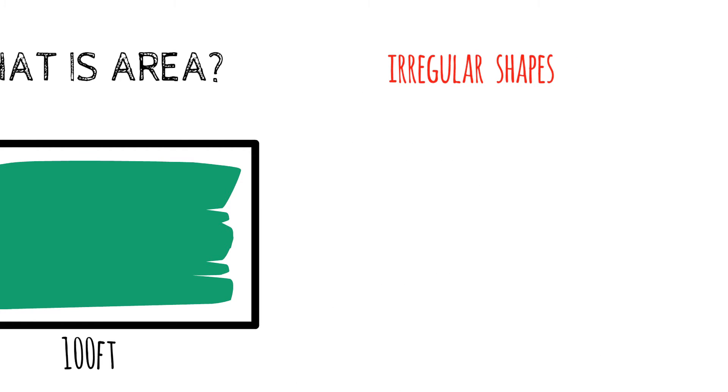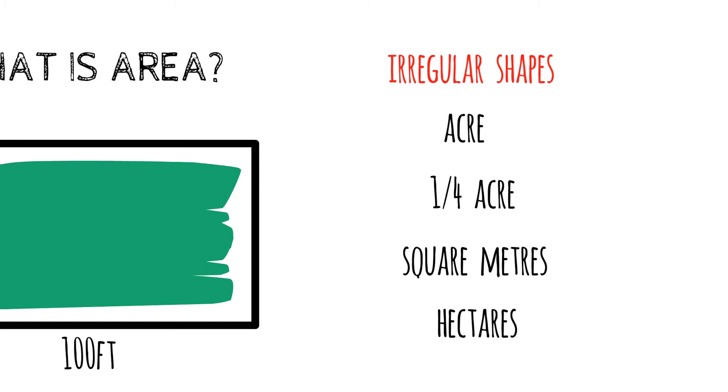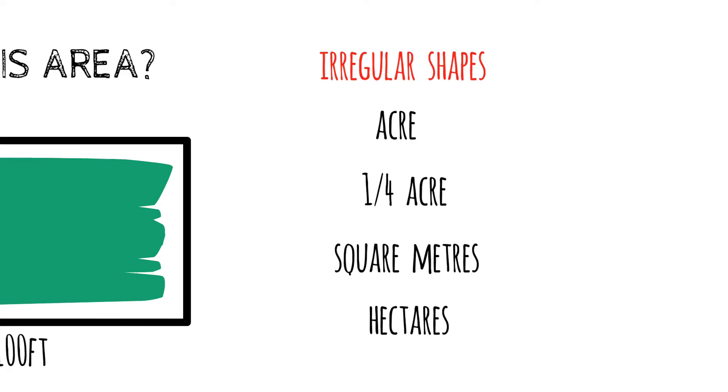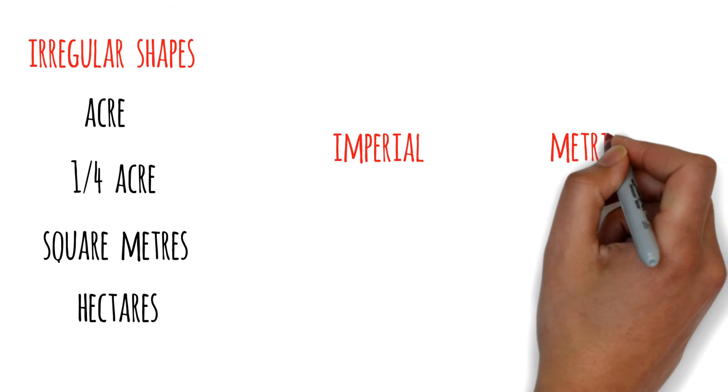So they are best defined using the area they occupy. This is where terms like an acre, a quarter of an acre, square meters, and hectares are used. Again, the system of measurements are mixed, meaning both the imperial and metric standards are used.